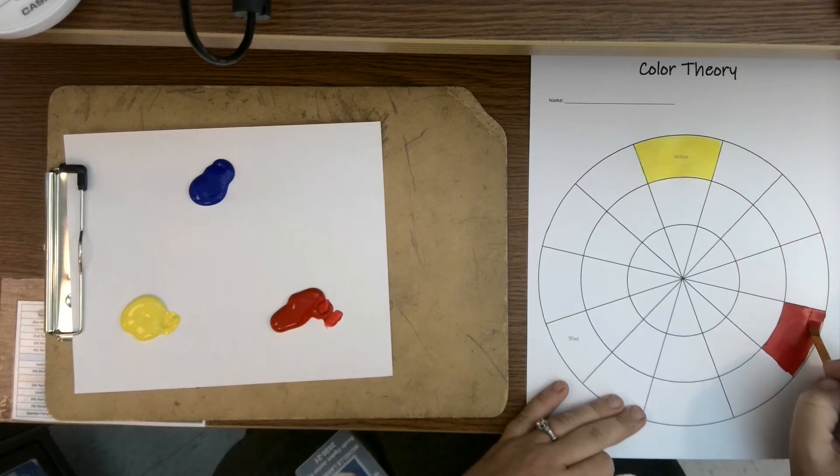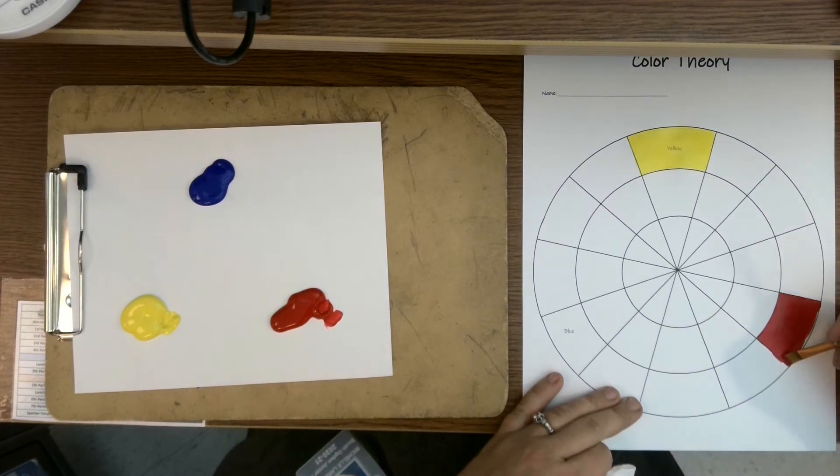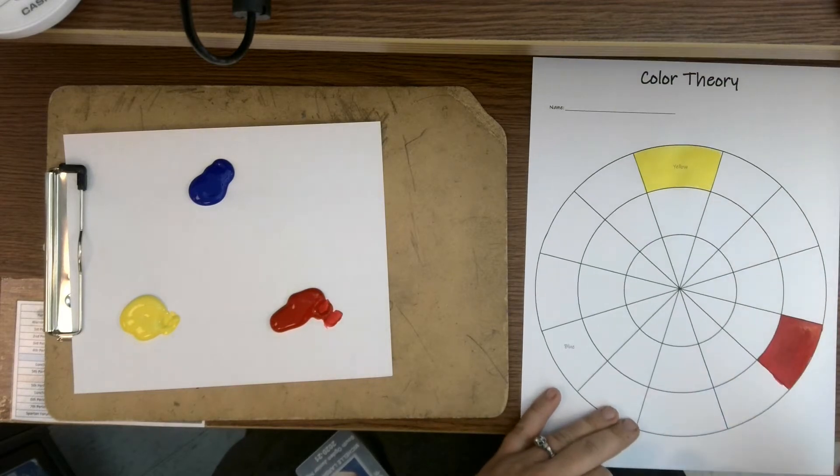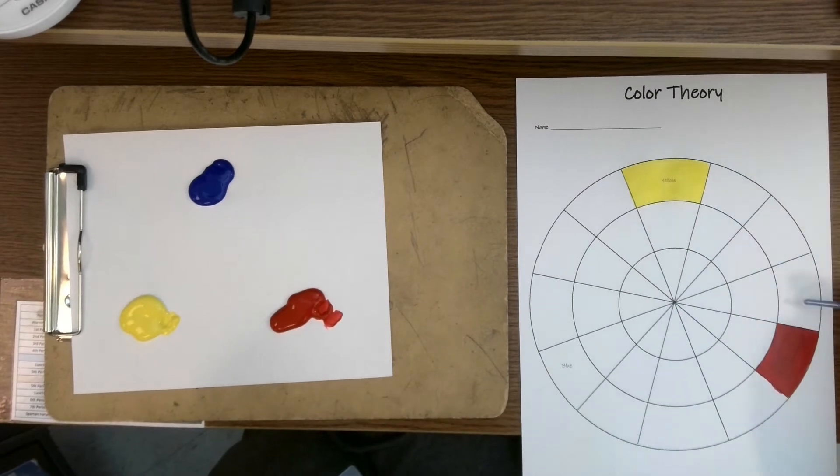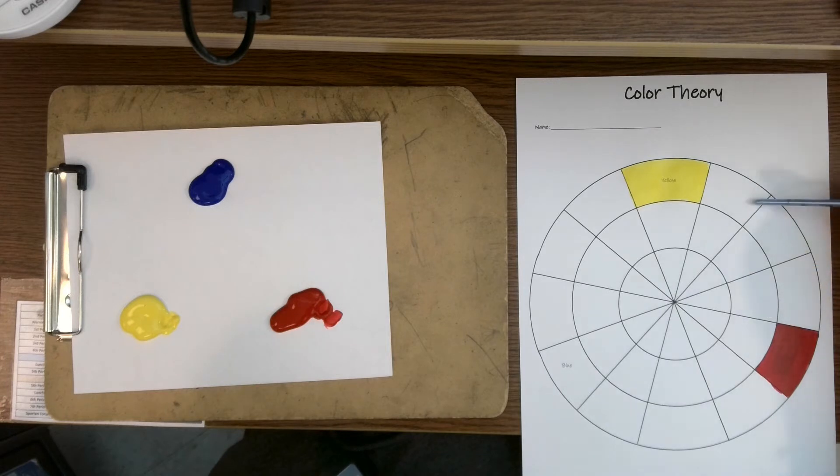So first thing you can do is just paint in the primary colors which I have labeled for you, blue, red, and yellow. I'm not going to paint my blue right now. I'll come to that. So I'm going to do this section right here, and this section between the yellow and red is going to be different mixtures of yellow and red.